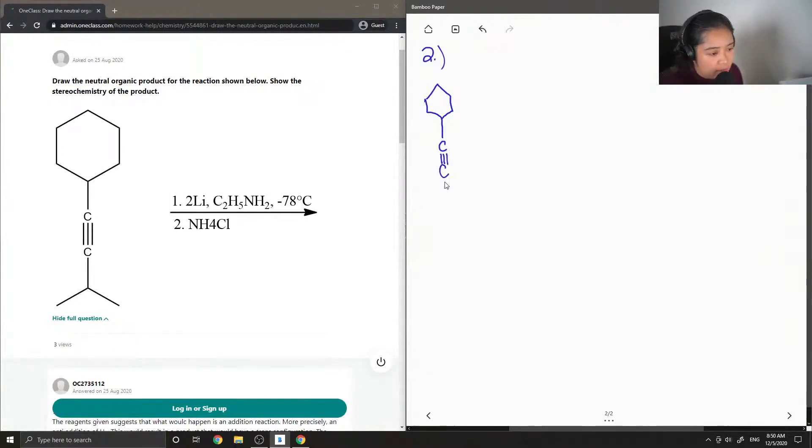So this is just an alkyne molecule because it has a triple bond. And it reacts with this lithium metal complex and ammonium chloride.